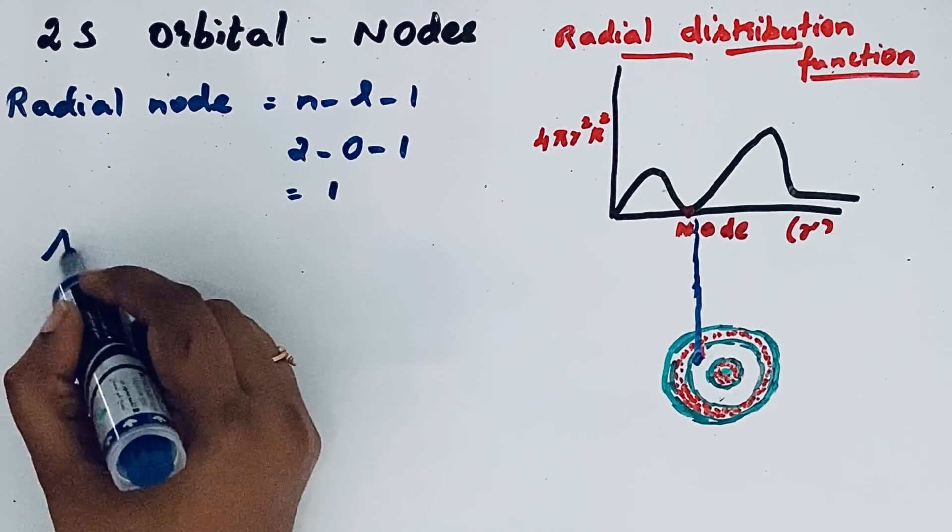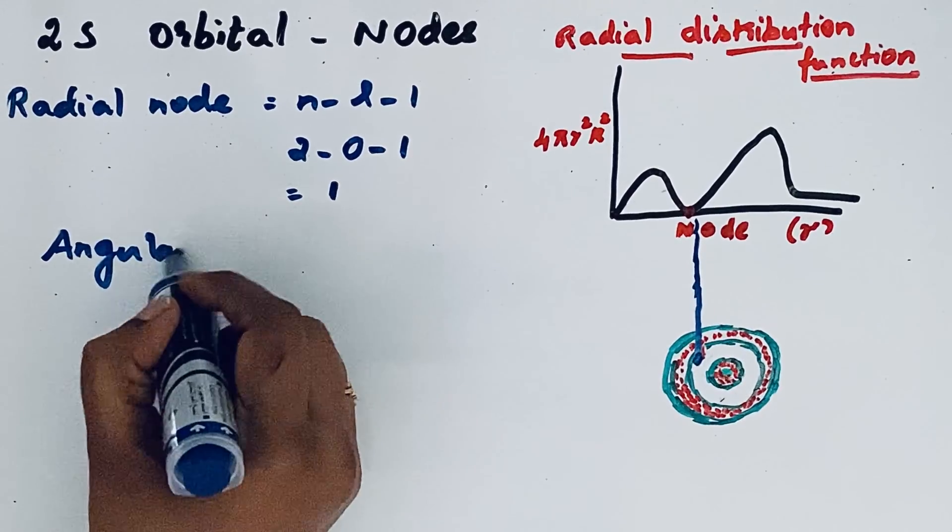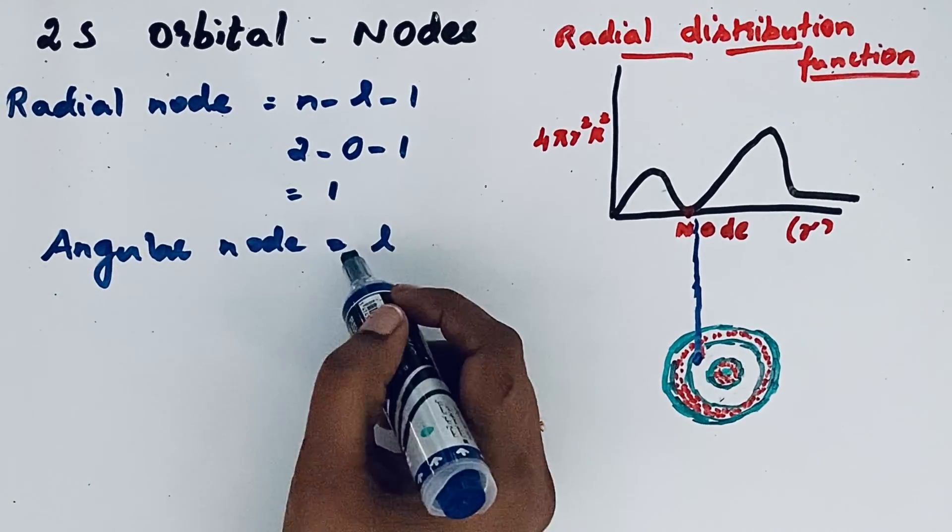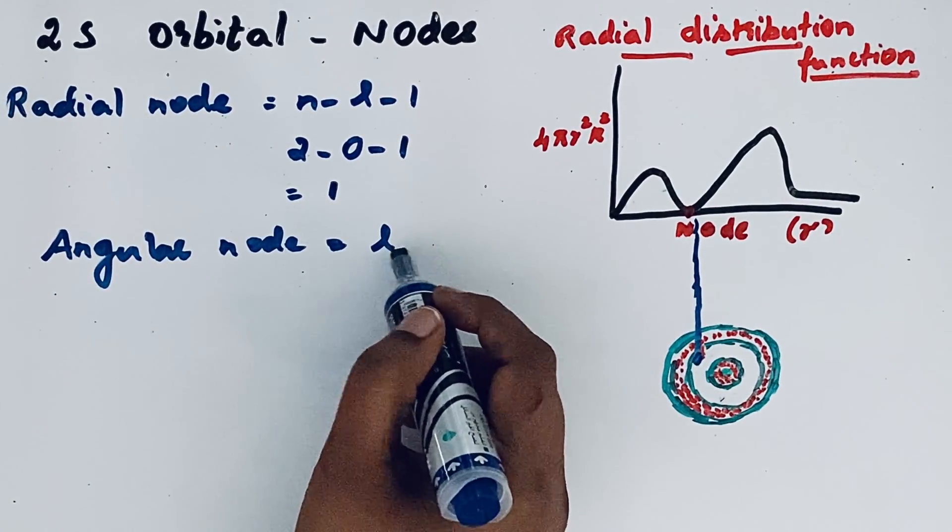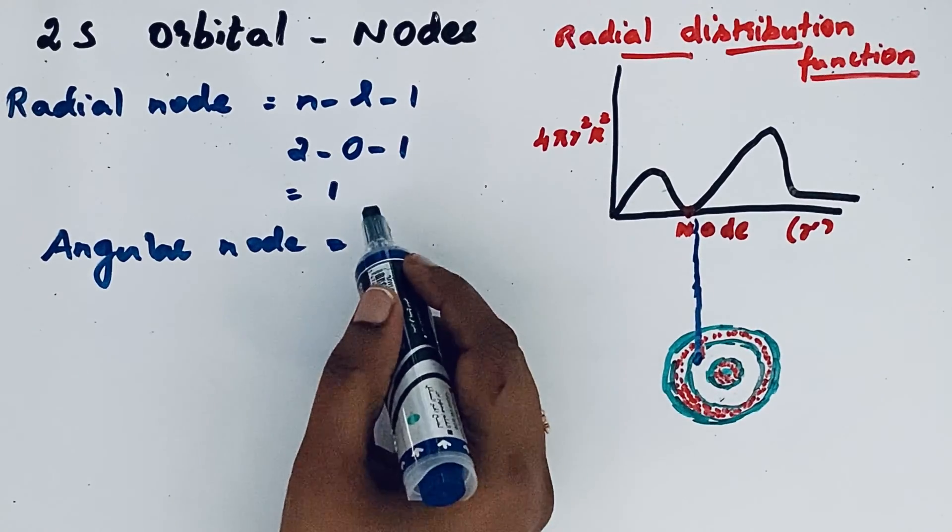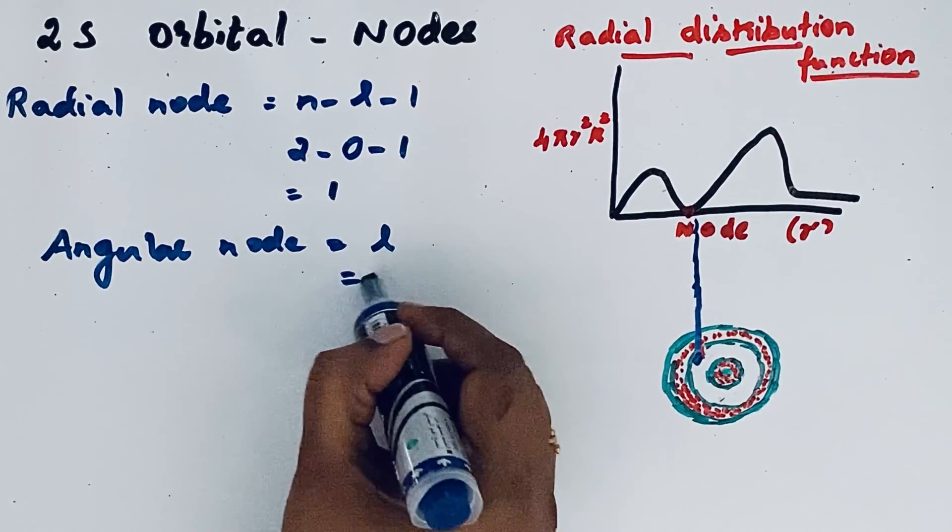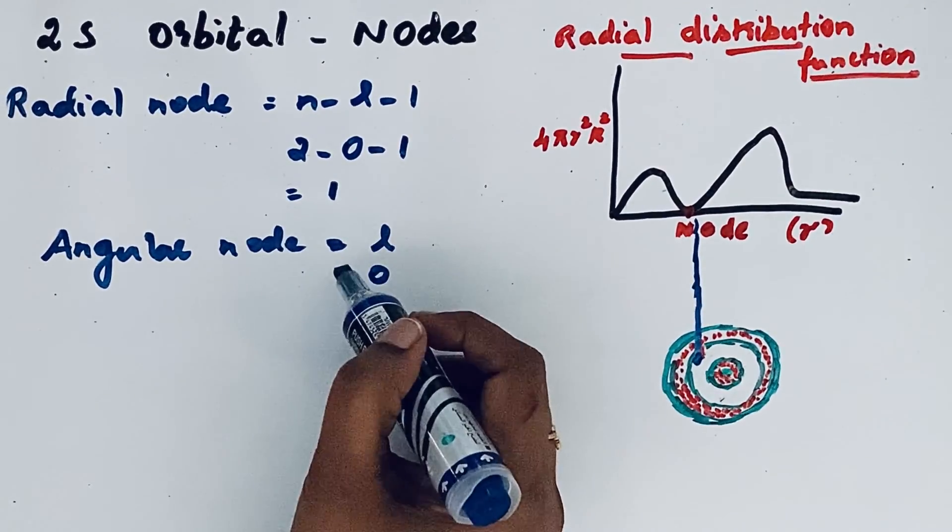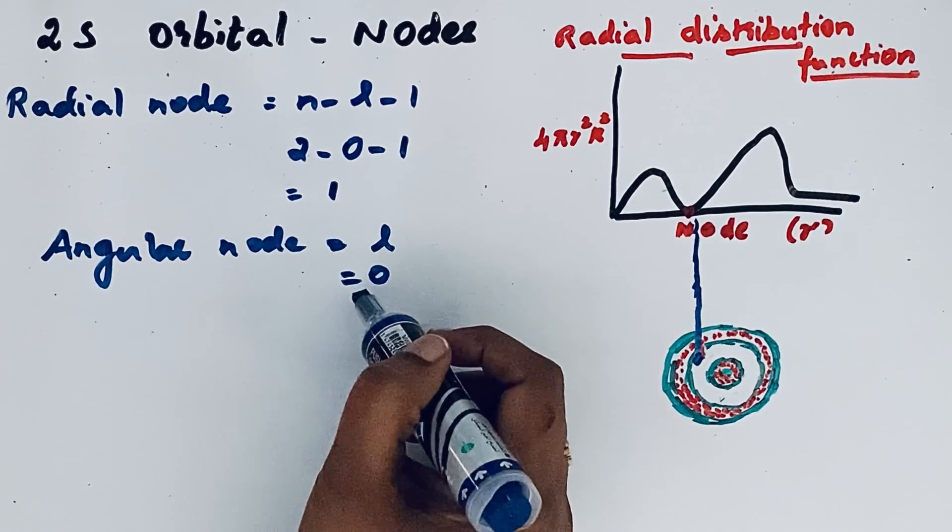For angular node, the formula is l. l is the azimuthal quantum number. For s orbital, l is equal to 0. So it means there is no angular node in s orbital.